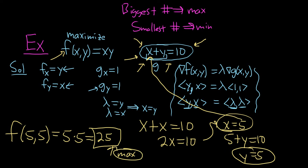So again, you compute the gradient of f, compute the gradient of g, you put a lambda here, and then you solve. In this case, we solve for lambda and found that x equals y. Then we use our constraint to solve for x and y. When you're done, you plug them back into the original function. That's how you use Lagrange multipliers. I hope this video has been helpful.